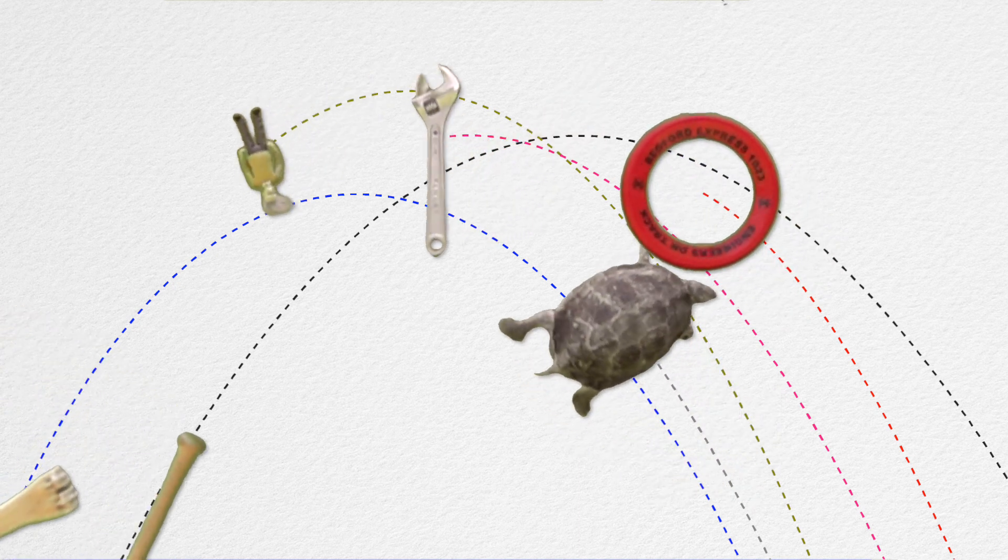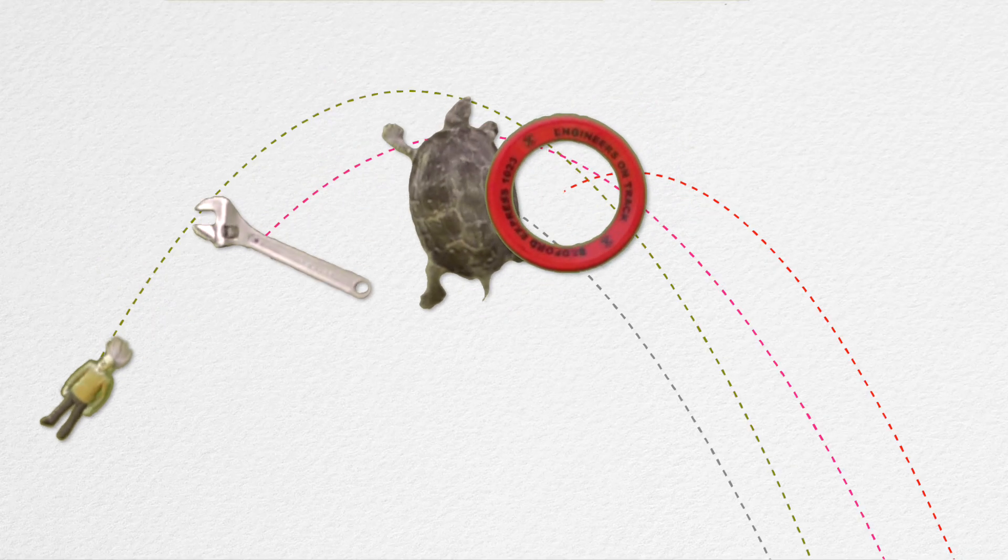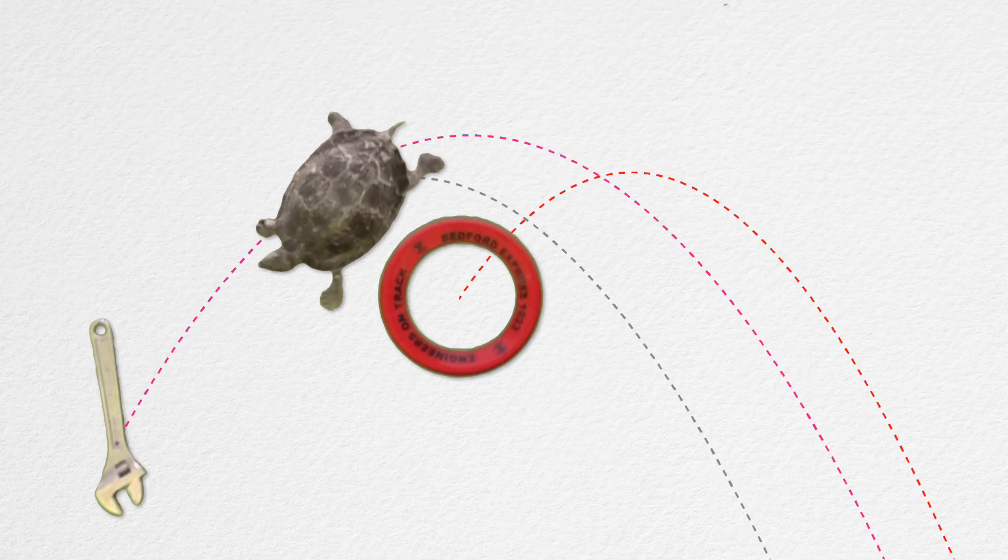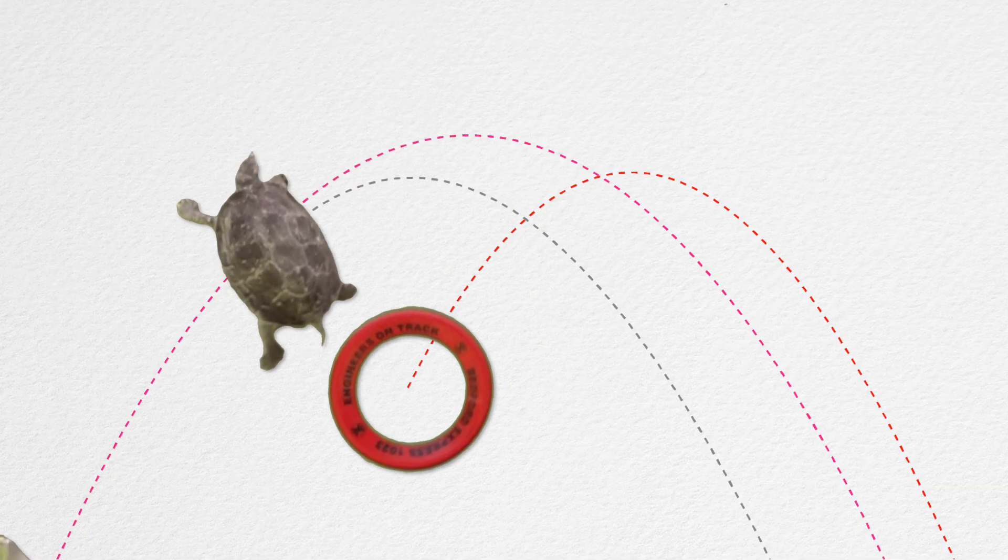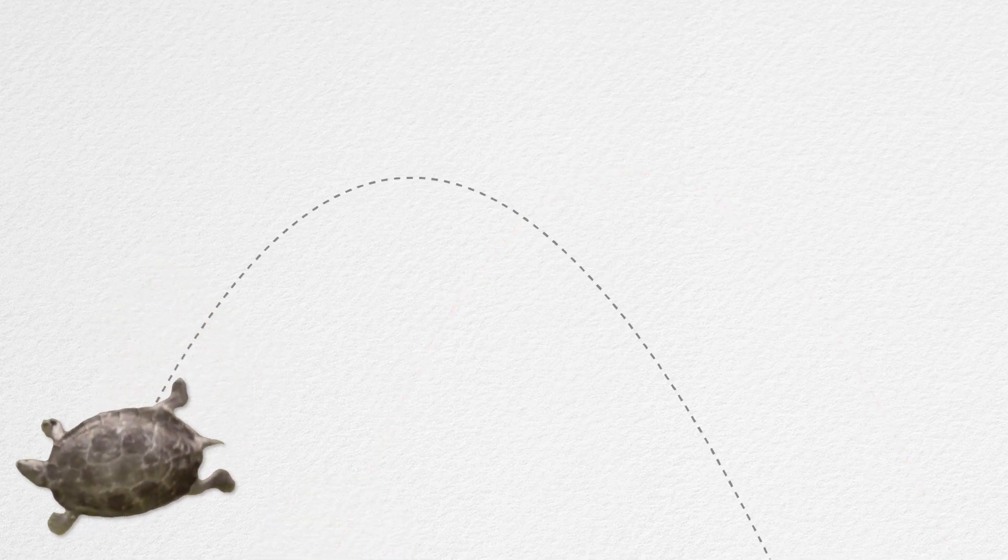Again, notice the center of mass of all of these objects follows the parabolic path of an object in projectile motion. And we can treat each object as if the force of gravity acts on the object's center of mass. This is true for all objects in projectile motion, even me jumping the wake on a wakeboard.